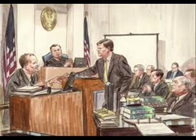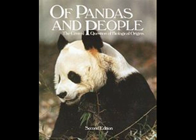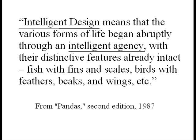In the earliest manuscripts of Pandas and People, creationism was defined as follows: 'Creation means that the various forms of life began abruptly through the agency of an intelligent creator, with their distinctive features already intact — fish with fins and scales, birds with feathers, beaks and wings, etc.' In the post-Edwards v. Aguilard edition of Pandas, the definition read like this: 'Intelligent design means that the various forms of life began abruptly through an intelligent agency, with their distinctive features already intact — fish with fins and scales, birds with feathers, beaks and wings, etc.'